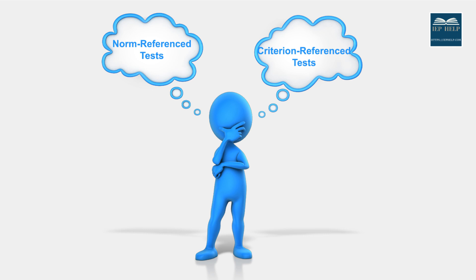When it comes to evaluating a child's skills and educational needs, there are many tests we could consider, but just a few types of tests. Two commonly discussed types are norm-referenced and criterion-referenced tests. In this video, I'll break down what these tests are, why they're used, and when to use each one.